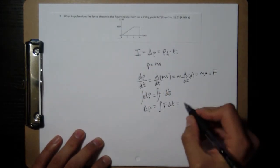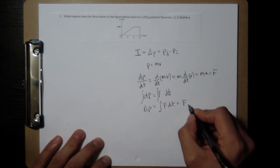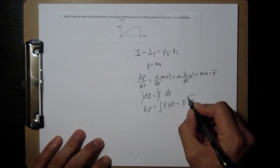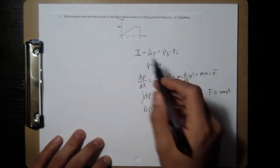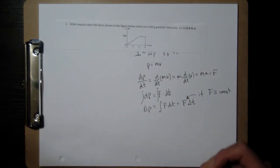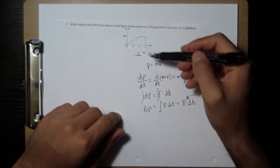And if the force were constant, then this would just be force times the change in time. So this is if F is constant. In this case, it's not constant, but what we can do is we can just geometrically look at the area under the graph.